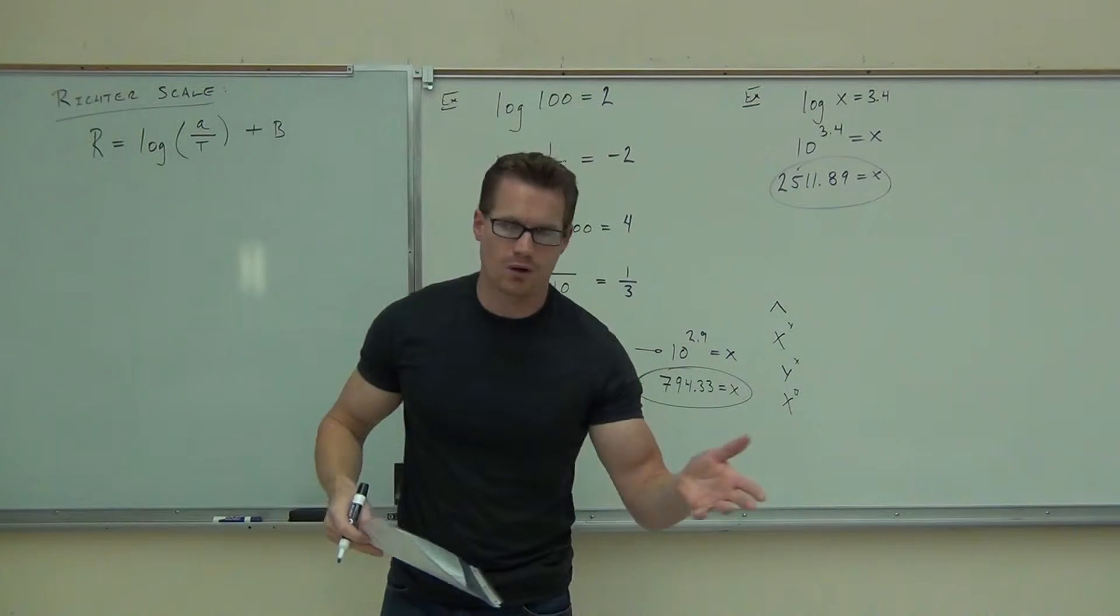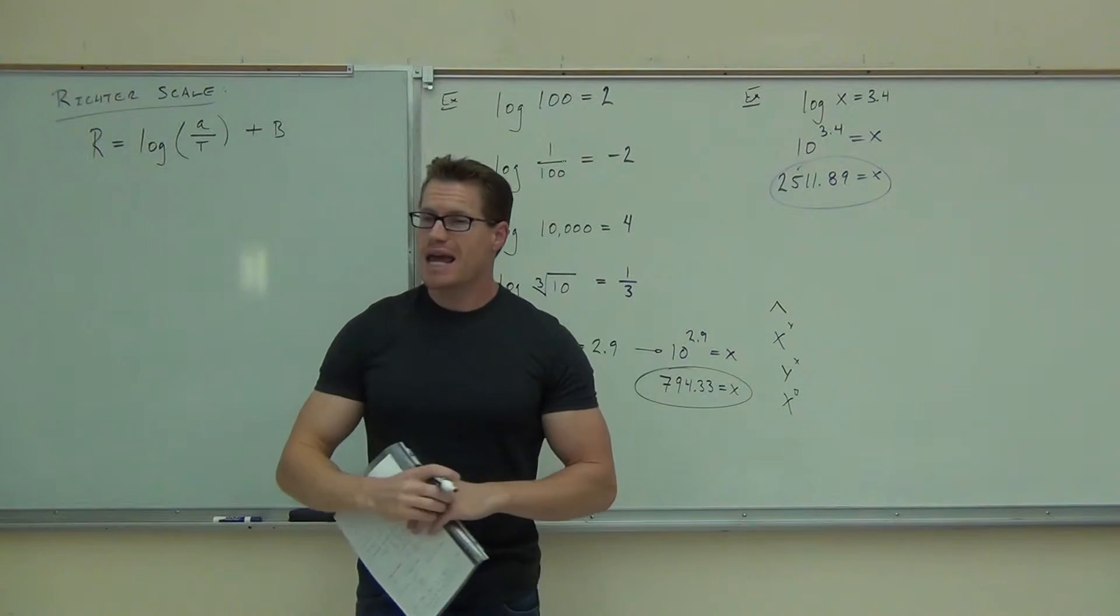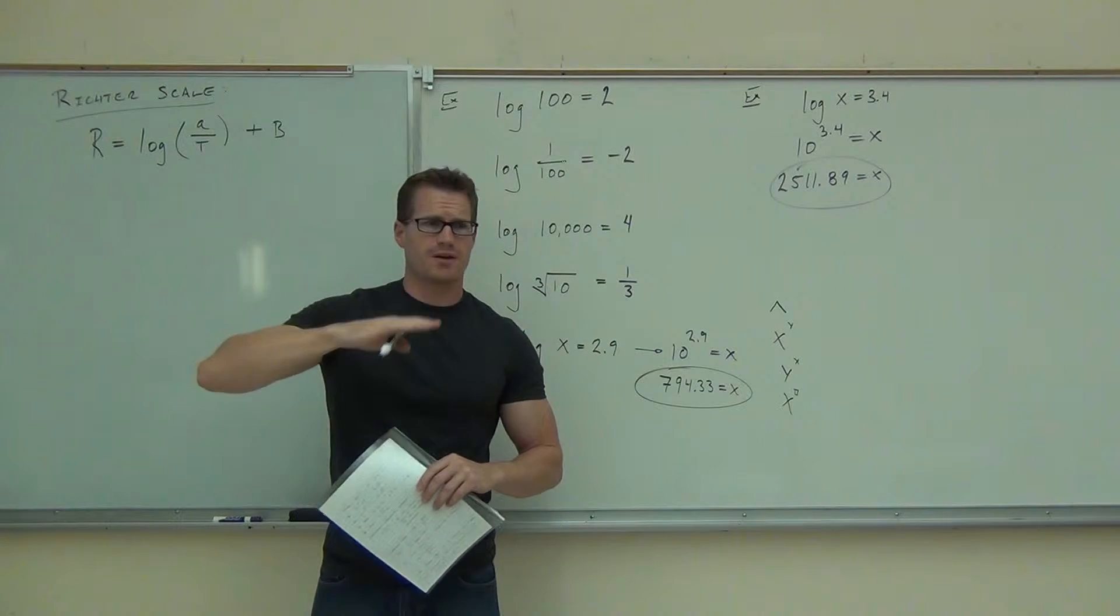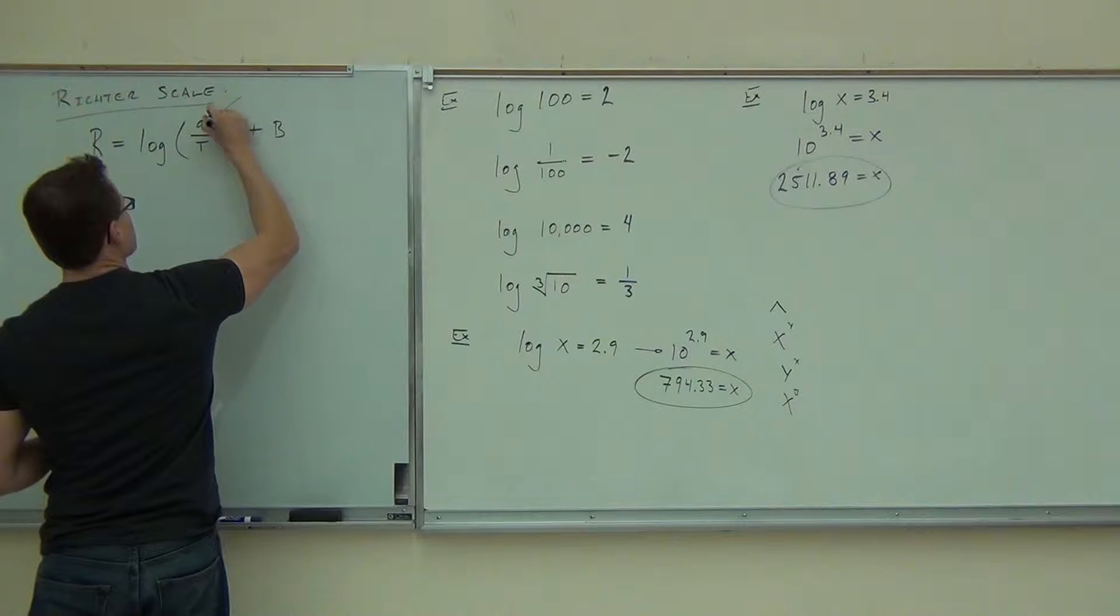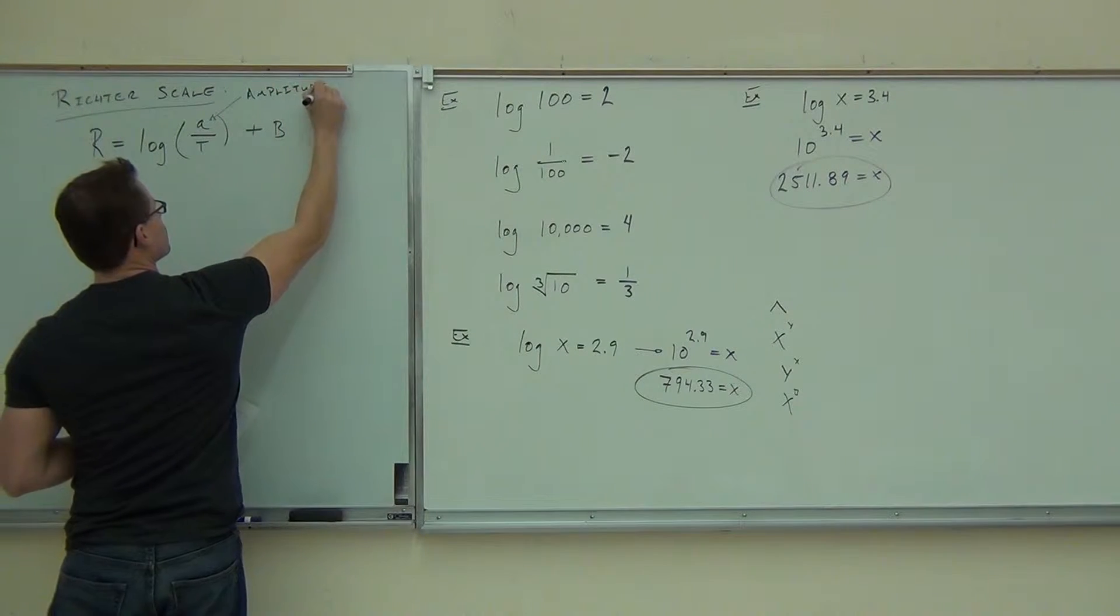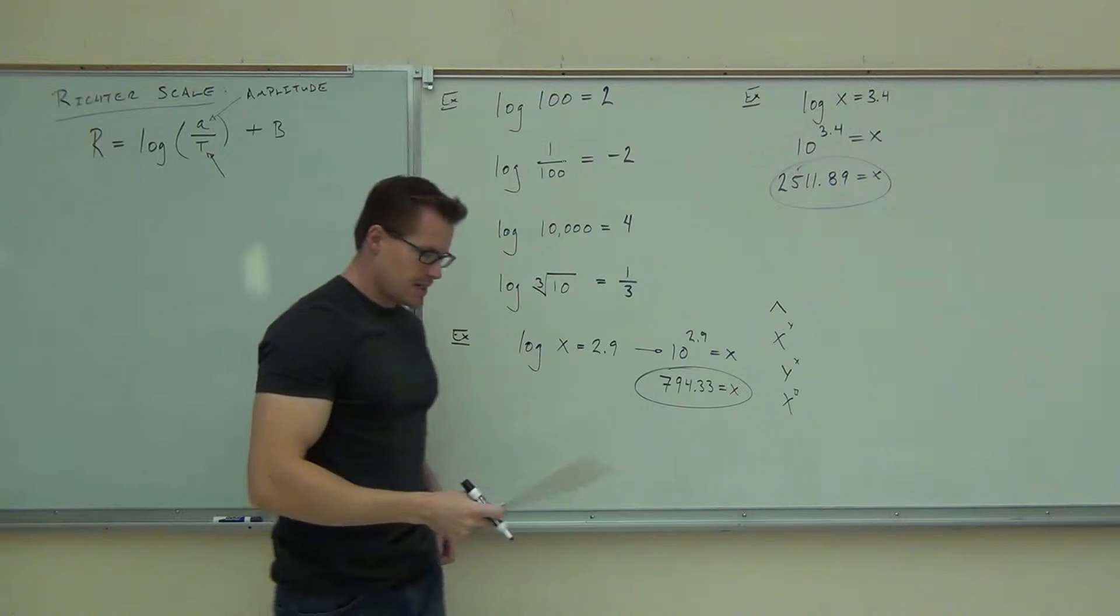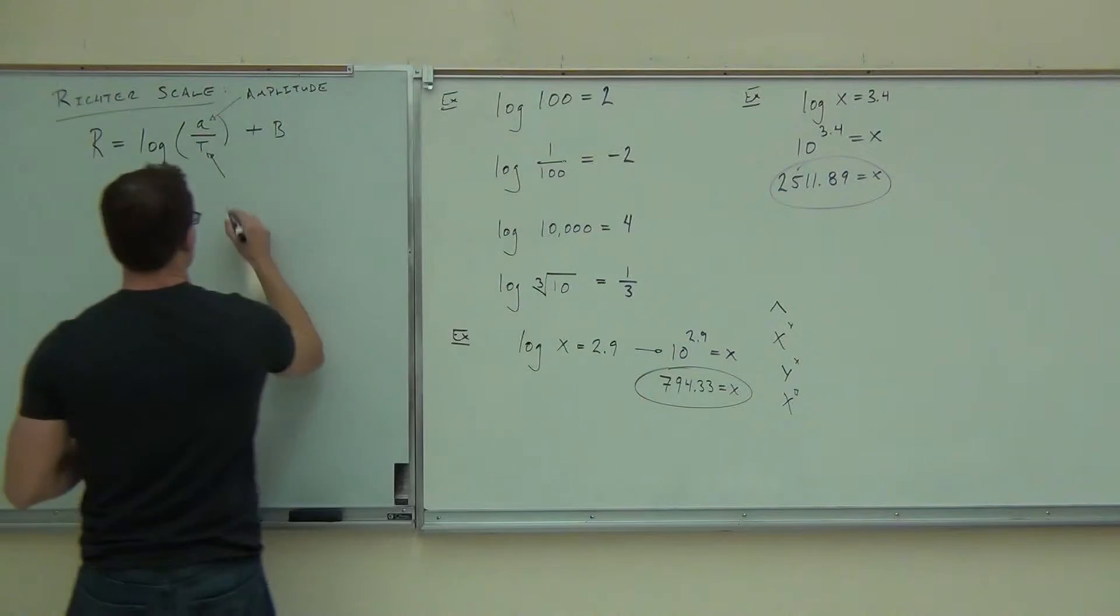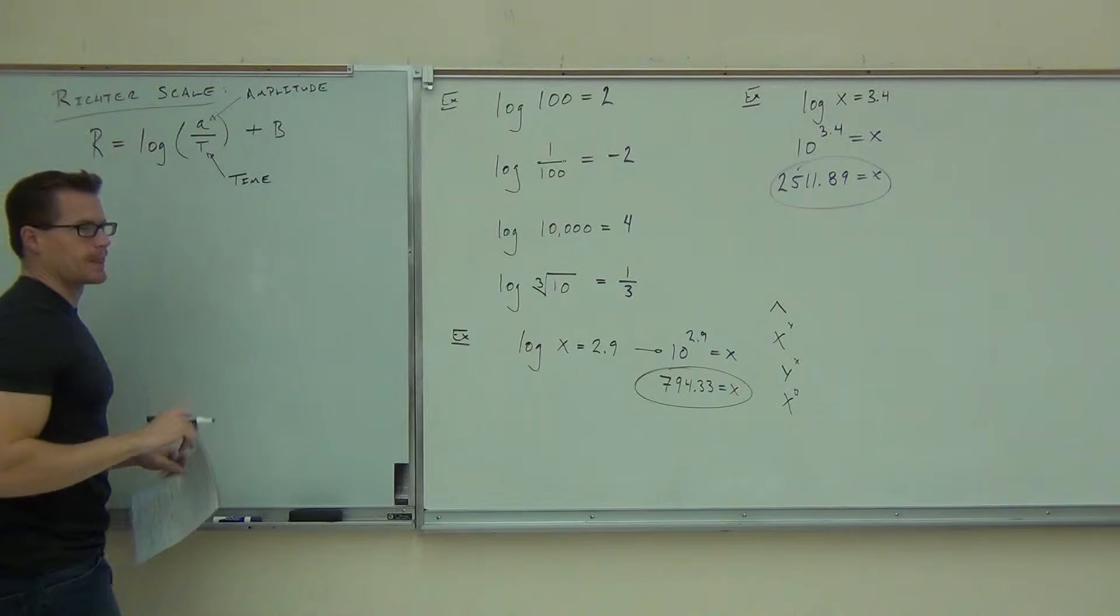Now, here's what those letters mean. Of course, a logarithm is a logarithm. We know what that is. That's on your calculator because the base is 10. A, that little a, is called the amplitude. Amplitude is a wave reading, how much it's rising and falling. T, that's the time between the waves.